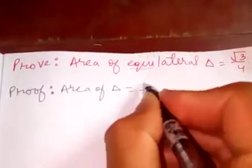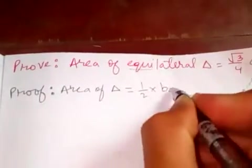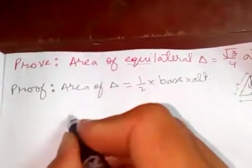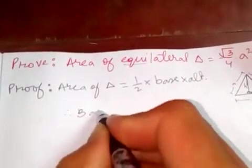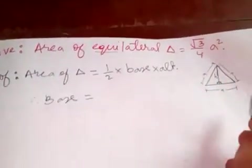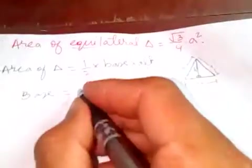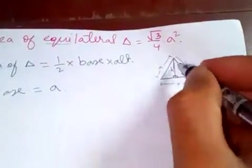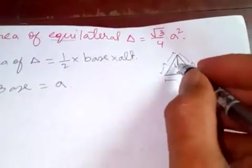Any triangle is, we know, half × base × altitude. So in this triangle the base is 'a', and now we need to find the altitude which is h.